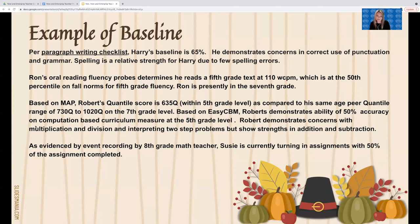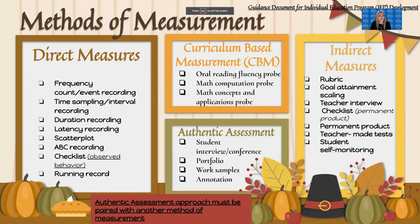Now we have the example of baseline, and we've talked about these methods of measurement. Methods of measurement are categorized into essentially four different categories: direct measures, curriculum-based measurements, indirect measures, and authentic assessment. It's very important to know that if you use an authentic assessment, it has to be paired with another method of measurement. For example, if you want to use student work samples or an interview, you have to use some other kind of measurement to go with that — such as a checklist.